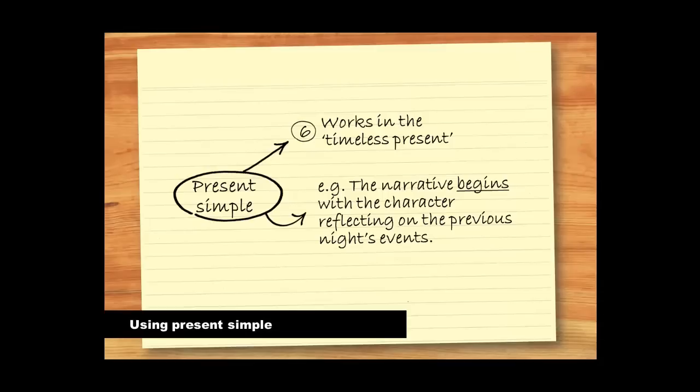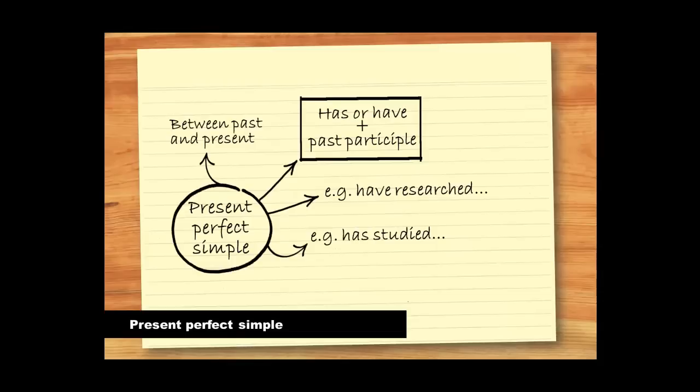But what about when the present simple just doesn't seem to fit what we want to say? Like, for example, when something sits between the past and the present. Here's when we might want to use the present perfect simple. The present perfect simple combines have or has with the past participle.